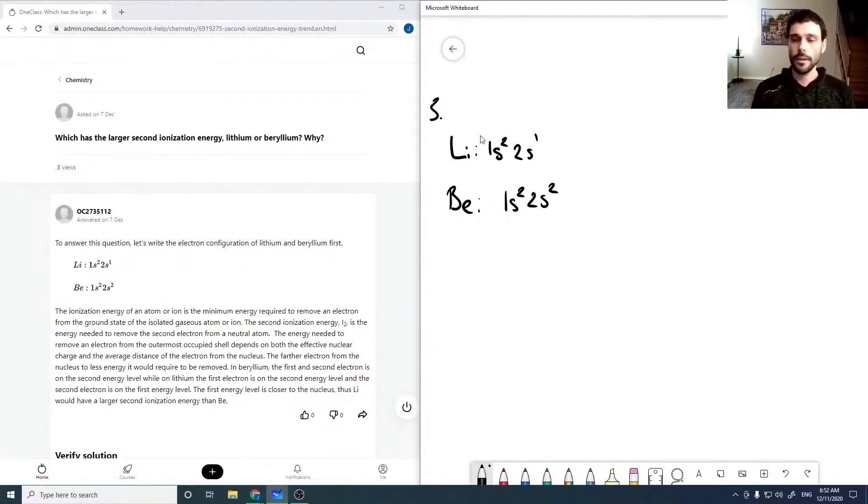So to look at ionization energy, either first or second, general rule of thumb is that it's easier to remove a valence electron as opposed to one of the inner shell electrons.